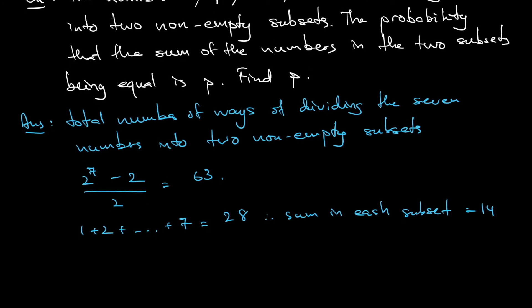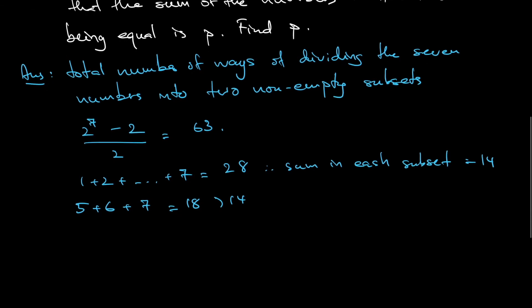Now I want to focus on the 3 numbers 5, 6, 7. They add together to 18, which is already above 14. So if these 3 numbers are already above 14 when added together, that means 5, 6, and 7 cannot be in the same group. So I will break this into cases.